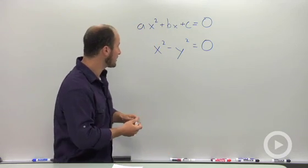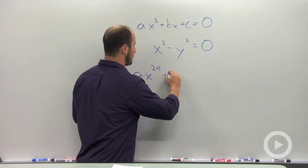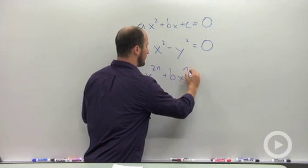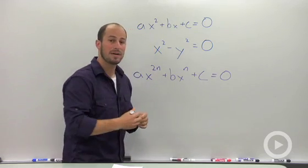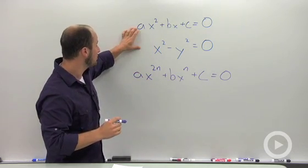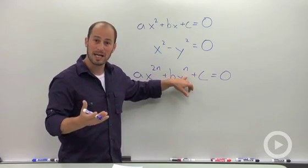The first one is something of the form ax to the 2n plus bx to the n plus c equals 0. It's very similar to what we have up here, but we're throwing in these extra little exponents.